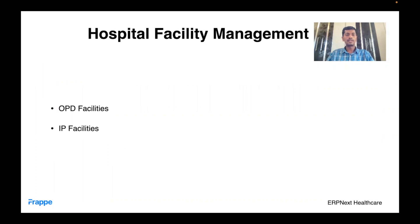In any department, generally there will be two kinds of facilities. One is OPD facilities, which is outpatient department facilities like consultation rooms and nursing rooms, etc. And the other part is inpatient facilities, which includes operation theater, general ward beds, ICU beds, etc.